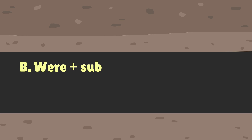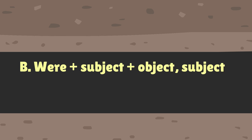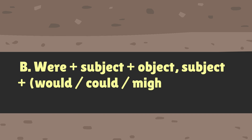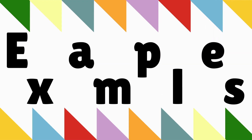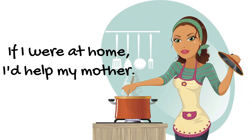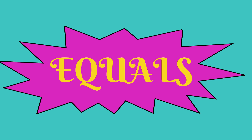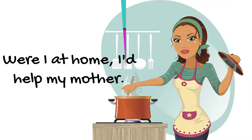Pattern B (Be): Were plus Subject plus Object, Subject plus Would/Could/Might/Should plus Infinitive. Example: If I were at home, I'd help my mother. Equals: Were I at home, I'd help my mother.